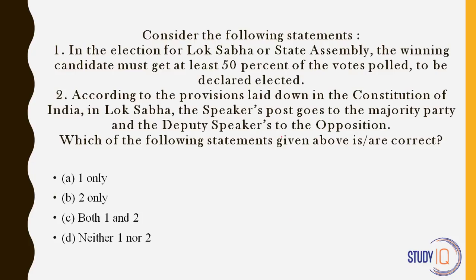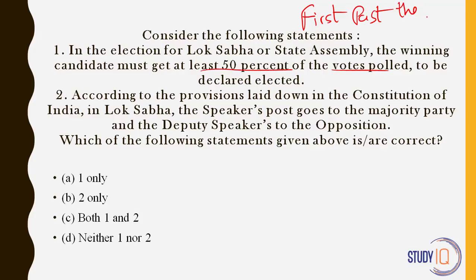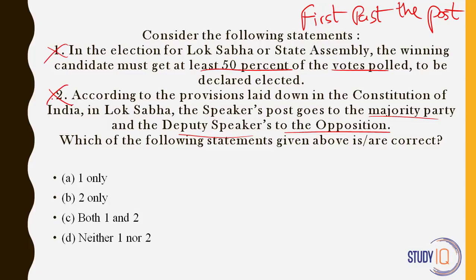Consider the following statements: in elections for Lok Sabha or state assembly, the winning candidate must get at least 50% of the votes — is this correct? No. We have politicians who win with 25–30% of the vote because India follows the first-past-the-post system. Even getting 30% is sufficient if your opponents get less. Second, according to the constitution, the Lok Sabha speaker's post goes to the majority party and the deputy speaker to the opposition. This is nowhere written in the constitution — it is a convention that has formed after independence. So our answer is neither one nor two.